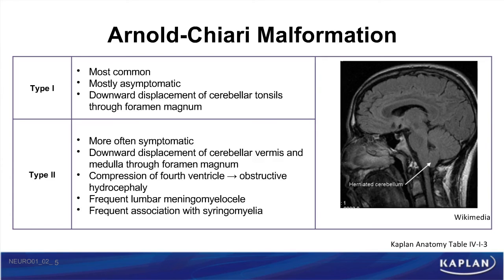Type 2 is associated with a downward displacement of the cerebellar vermis and medulla through the foramen magnum. This displacement causes a compression of the fourth ventricle, which results in obstructive hydrocephalus. It is also associated with thoracolumbar meningomyelocele and syringomyelia, with paralysis below the level of the lesion.